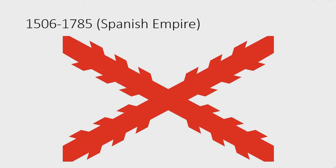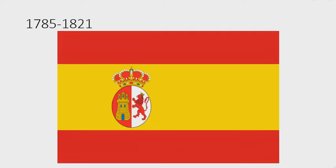1506 to 1785: at this time, Mexico was owned by the Spanish Empire. There is a red cross with six red shapes coming out of each line. 1785 to 1821: the flag was updated to the flag the Spanish Empire used from 1785 to 1873.